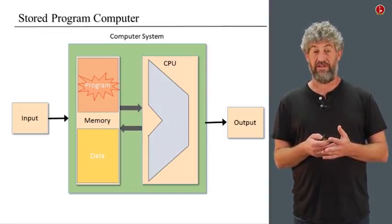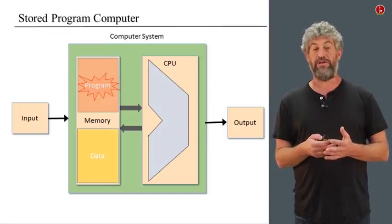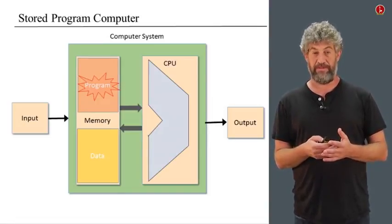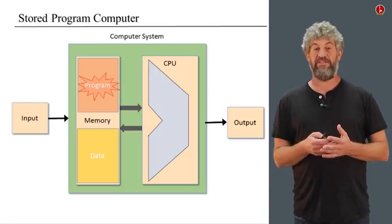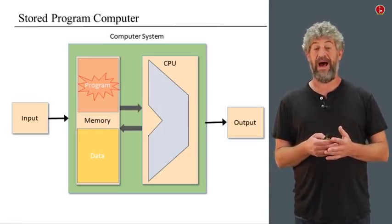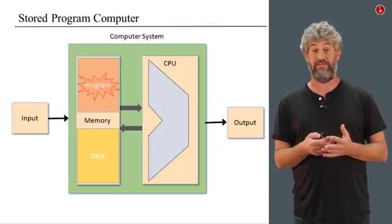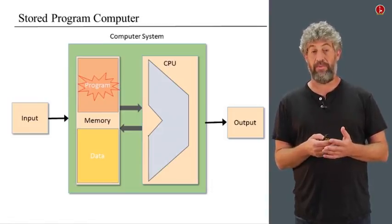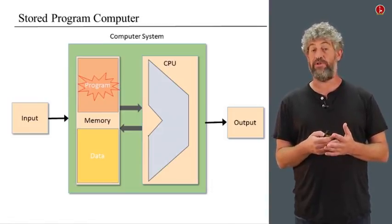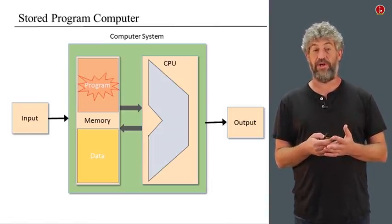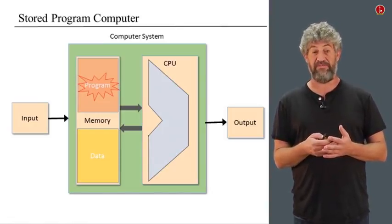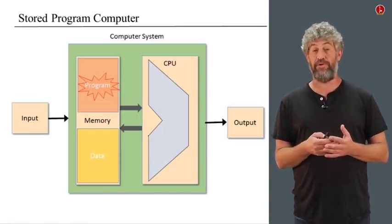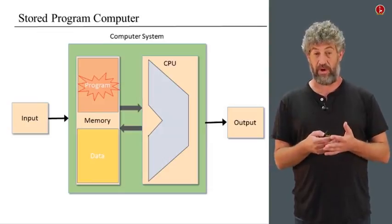Beyond that, we're going to have the central processing unit, which actually carries out these instructions, runs them, and controls everything. Let us now look more closely at how this actually happens, how the central processing unit is built, and how all the control back and forth works. We're going to describe this in a general way, and later we'll talk much more specifically about the computers that we're building for this project.